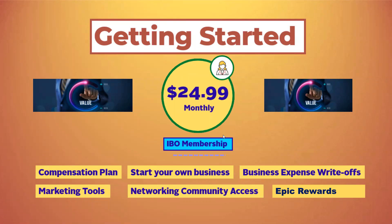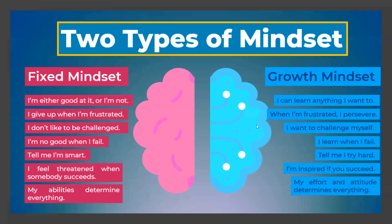All of this only costs $24.99. So $25 gives you access to everything we've discussed in this video — fantastic rewards, a fantastic business, and a fantastic opportunity to change your life forever. But you've got to have the right mindset. You need to have an abundance or growth mindset. You've got to be willing to learn, be coachable, be hungry, and want to succeed. We want people who have a growth mindset and are willing to do whatever it takes to live the life of their dreams.